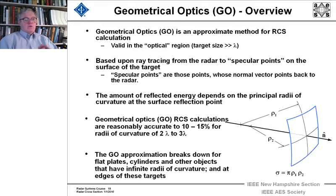Specular points are those points whose normal vector points back to the radar. Those points will have a curvature in most cases, and the amount of reflected energy that comes back to the radar depends on the principal radii of curvature of the surface of reflection of that point. When there isn't a curvature to that point, it's planar, and this method breaks down.